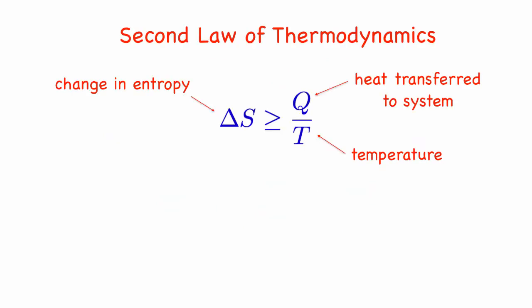The second law of thermodynamics involves entropy, and we will look at it in more detail in the next lecture. Roughly, entropy measures how energy is shared between all the modes of our system. The more the energy is evenly distributed, the greater the entropy. The second law says that the change in entropy has to be greater than or equal to the heat transferred divided by the temperature.